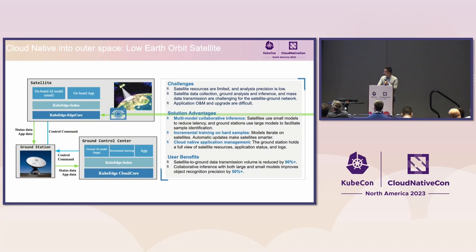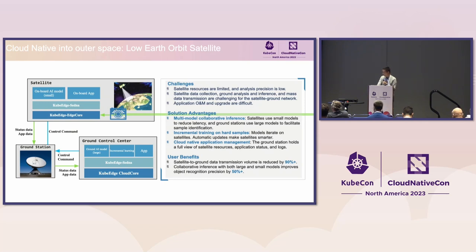We manage satellite applications in a cloud-native way. The ground station holds a full view of satellite resources, like a Kubernetes control plane dashboard, where you can see application status and do logging. With this approach, we reduced satellite-to-ground data transmission by more than 90%. Collaborative inference on both large and small models, depending on location, improved object recognition precision by more than 50%.